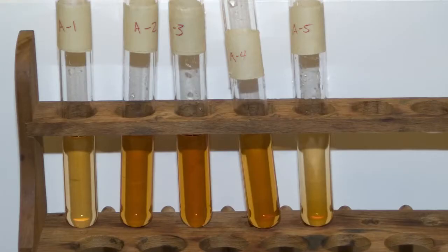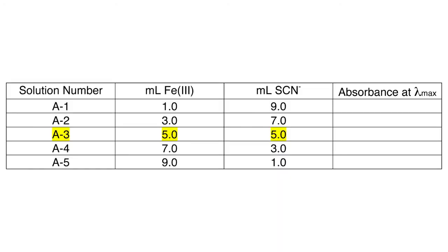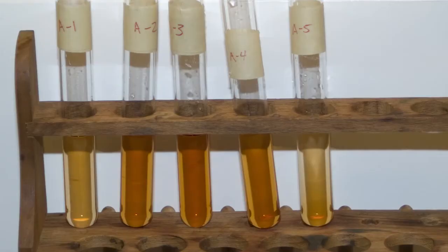Determination of the formula of the iron-thiocyanate complex. Job's law or the method of continuous variation will be used to verify the stoichiometry of the iron-thiocyanate complex. The principle of this method requires that you vary the number of moles of the two reactants while keeping the total number of moles of the reactants constant. A variable related to the amount of product form will be measured.